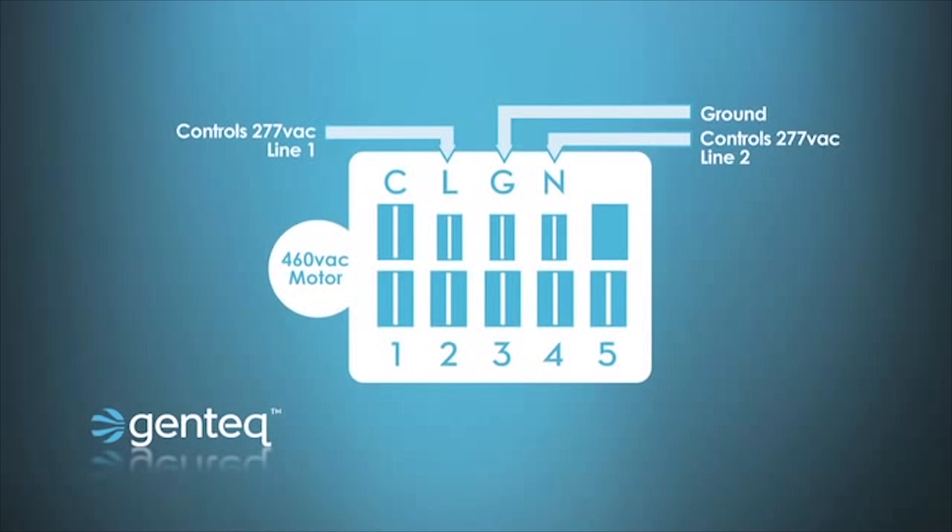And on the new 460 volt, again L stands for line one, G would be for ground, and N would be line two.